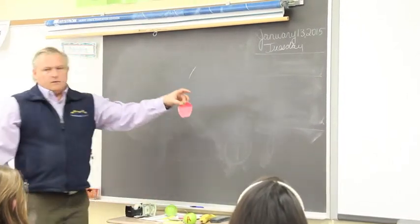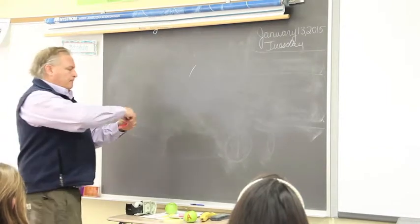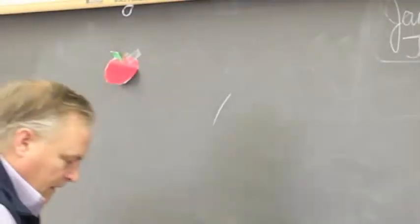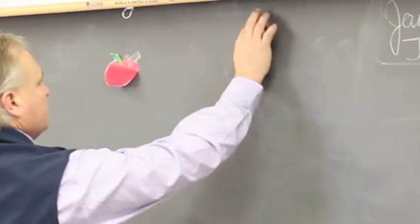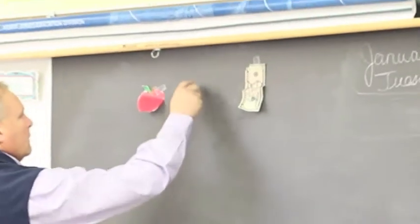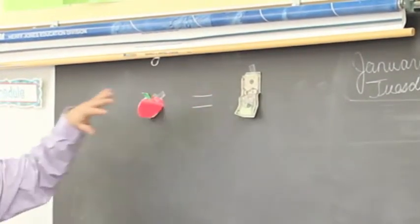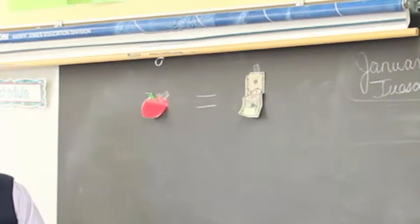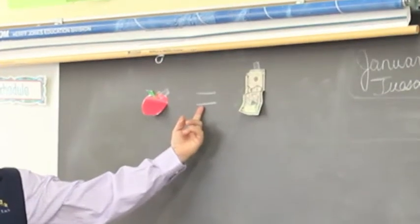So, what's this thing? Apple. What are we going to call it? Say A. A. Alright. What's this? Five dollars. What's the sign I can put in between here that says it's the same? Equal. Yeah.